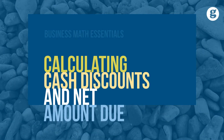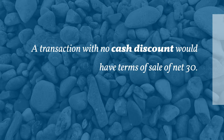Cash discounts are offered in the terms of sale. Let's take a look at calculating cash discounts and net amount due. A transaction with no cash discount would have terms of sale of net 30, which means that the net amount of the invoice is due in 30 days.